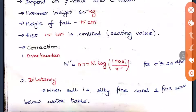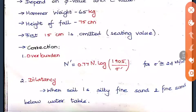Two corrections are applied in the SPT method. The first is the overburden correction — if overburden pressure is very high, the N value increases artificially, causing errors. The corrected value N' = 0.77 × N × log(1905 / σ'), where σ' is the effective stress, applied for values greater than 24 kN/m². The second is the dilatancy correction, applied for silty fine sand or soil below the water table.